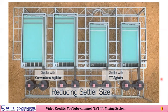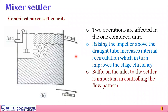Another design is the combined mixer-settler, where the mixer is directly integrated with the settler. This design can increase recirculation, which has both advantages and disadvantages. The level within the drop tube must be carefully managed to prevent recirculation and ensure proper flow. This integrated design is quite commonly used as a modern, compact configuration.